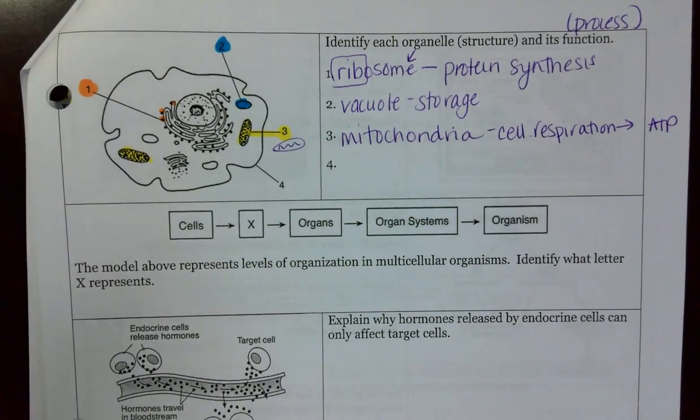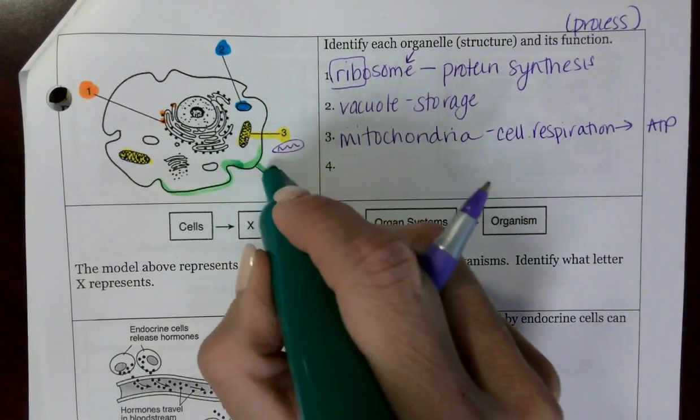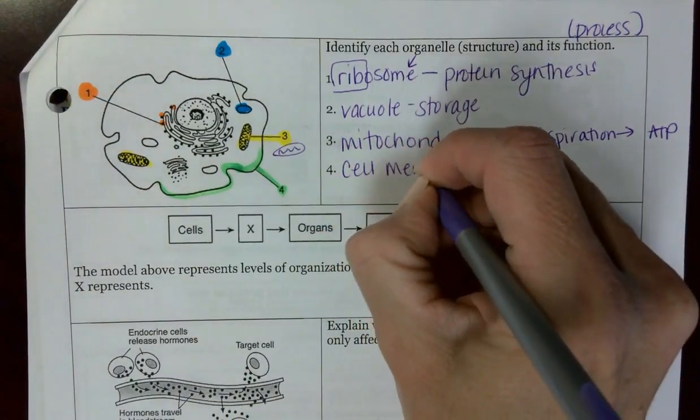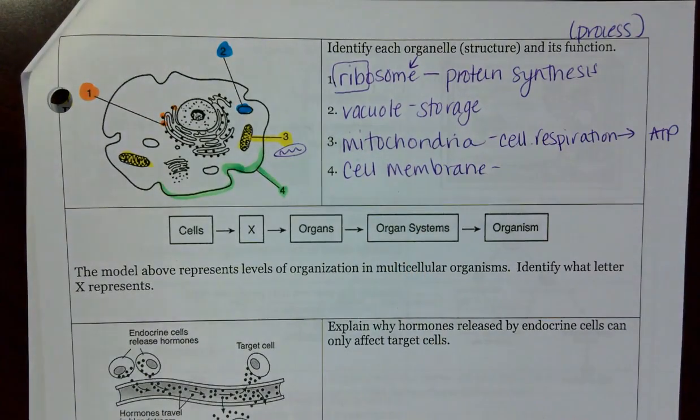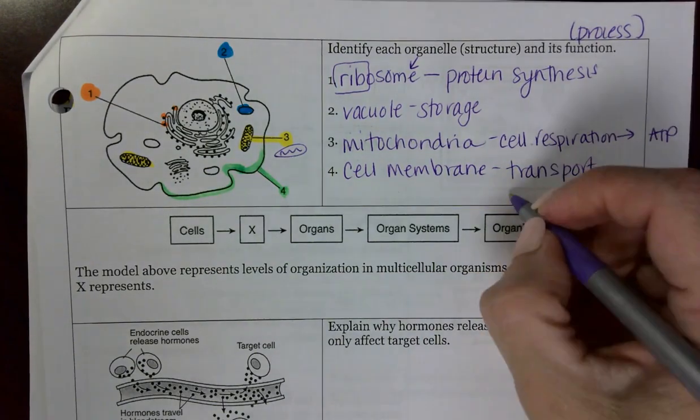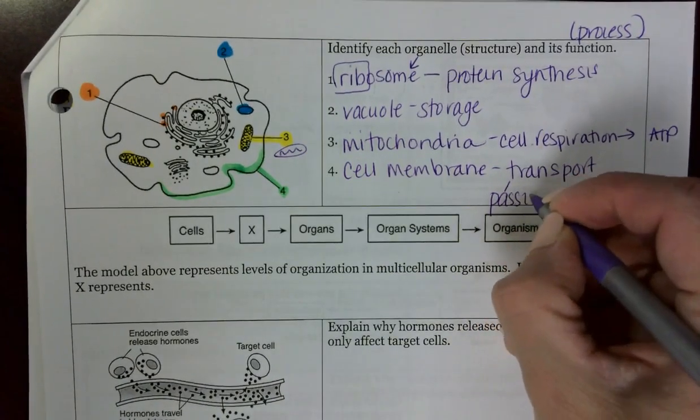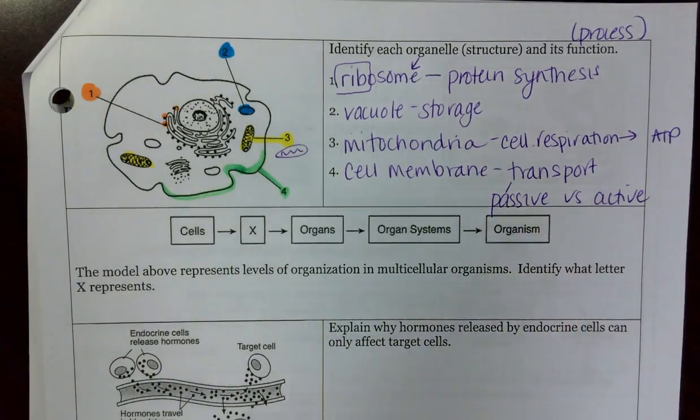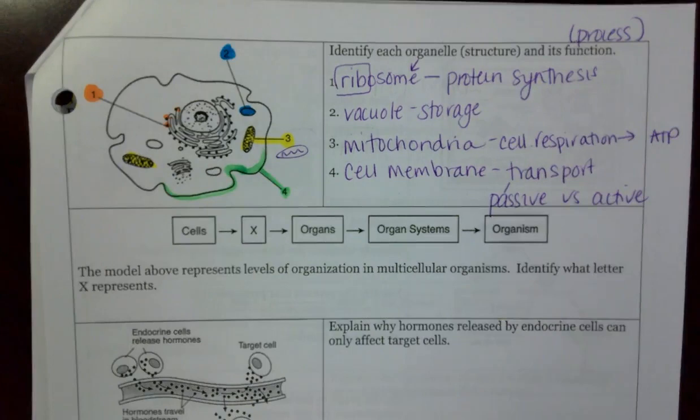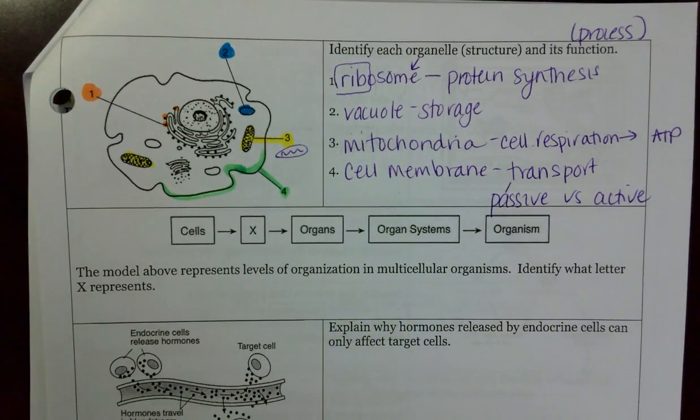And then our last organelle is the structure that goes all the way around. And that is going to be my cell or my plasma membrane. And this is involved in the process of transport. Think about passive transport, active transport. It's how things can get into and out of the cell. Also keep in mind that it is selectively permeable. That means that things can get in and out based on their size. Small molecules like glucose and water, carbon dioxide, and oxygen can easily pass through the little membrane. While as larger molecules such as starch and proteins and fats, they can't fit through.